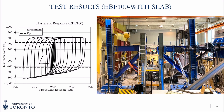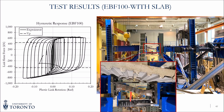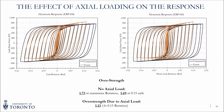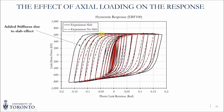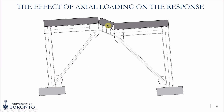In the test with the slab, the EBF overall performed similarly; however, the link was able to sustain one additional cycle, and this is the deformed shape at the largest deformation. A few discussion points: the presence of axial load caused additional hardening of the link — specifically at 0.15 radians we saw an additional overstrength factor of 1.13 due to the presence of tension. Additionally, comparing the tests with and without the slab, the test with the slab had higher stiffness in loading and unloading, which we believe is due to a compression field forming as the slab cracks, where aggregate interlock causes additional stiffness in the system.